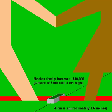Let's zoom in and look at the family on the 50-yard line. The median income in the United States — the middle income — is about $40,000. That would be a stack of $100 bills about an inch and a half high.